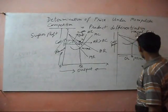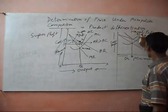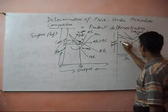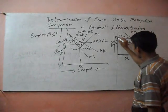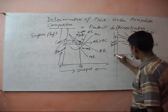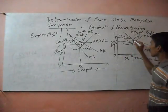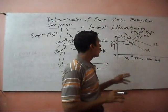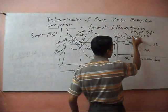And average cost touches the average revenue. Price will fix at this point. There is no super profit because average cost is equal to average revenue.